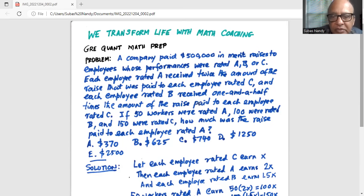If 50 workers were rated A, 100 were rated B, and 150 were rated C, how much was the raise paid to each employee rated A?